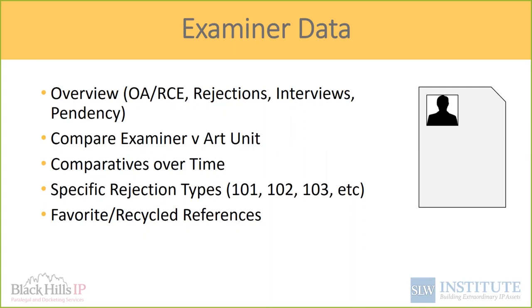It would be interesting to take the SPE for an art unit — maybe a newer one — and look at their examiner data from when they were a primary, to see what effect that has on the art unit. The propensities of the SPE on the art unit will often play out in how prosecution through the art unit flows. Every time you have an outlier examiner, the SPE will likely put special attention on them, bringing them back into compliance with the art unit over time.